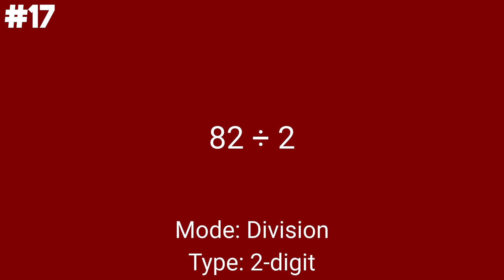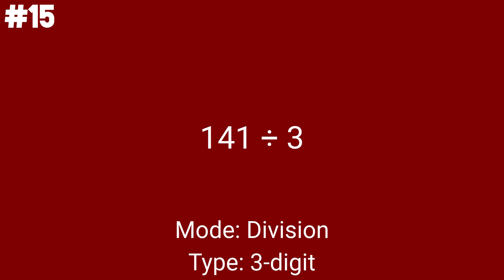82 divided by 2 is when you'll probably need to do some long division. This is division problem number 9. 93 divided by 3 is the last 2-digit division problem. Great going so far — we only have 15 more division problems and this video will end. Let's move on to the 3-digit division problems. 141 divided by 3 is the first 3-digit division problem, division problem number 11.